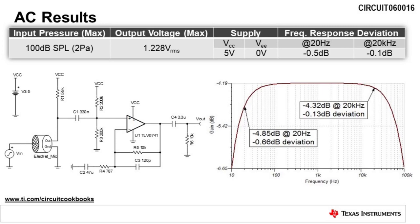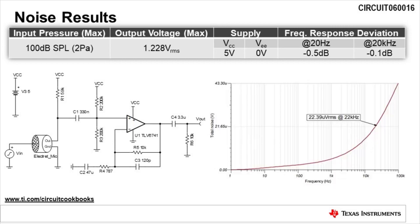Running an AC sweep analysis, we find that the frequency response deviation at 20 hertz is negative 0.66 dB and at 20 kilohertz is negative 1.3 dB. This verifies the functionality of the circuit. A noise analysis of the circuit shows that the total noise at the output of the circuit is 22.39 microvolts RMS.